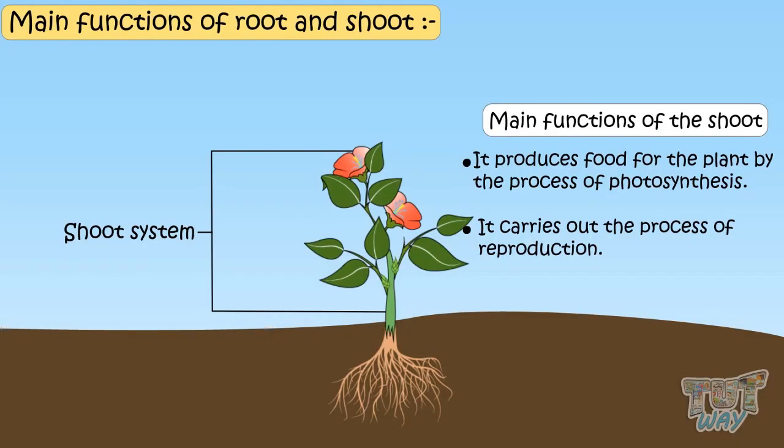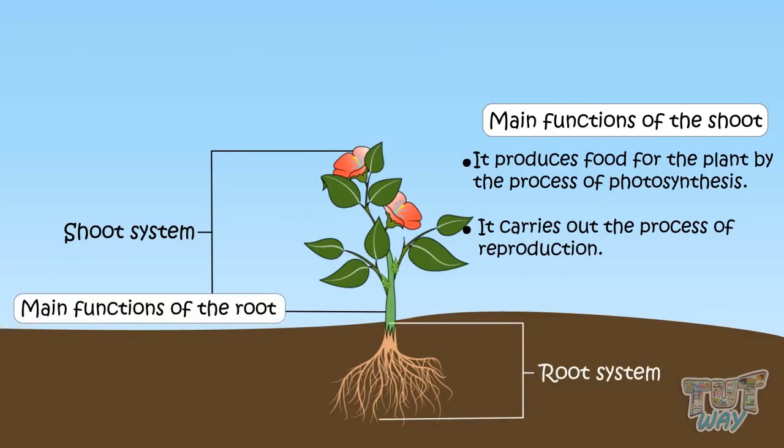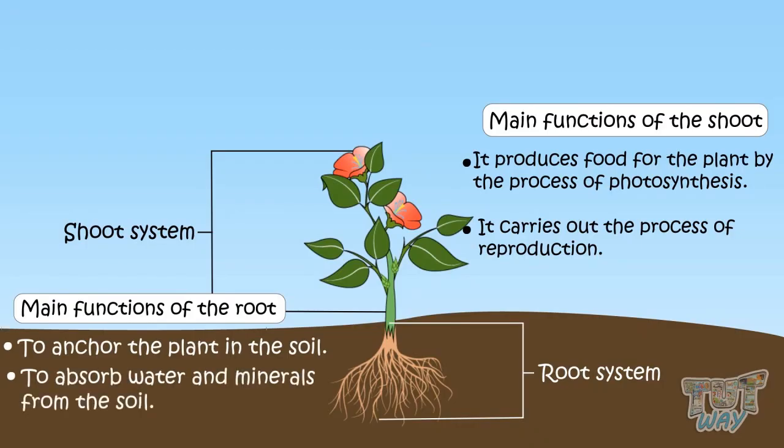The main functions of root are to anchor the plant in the soil and to absorb water and minerals from the soil and also stores food in some plants.